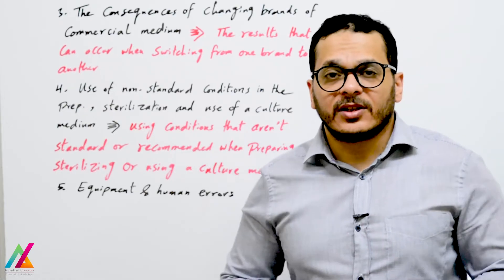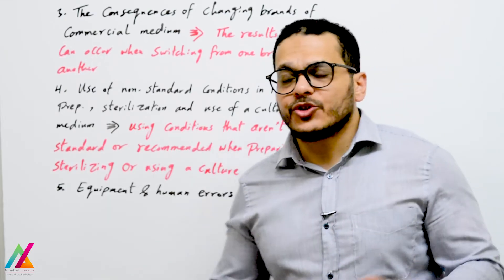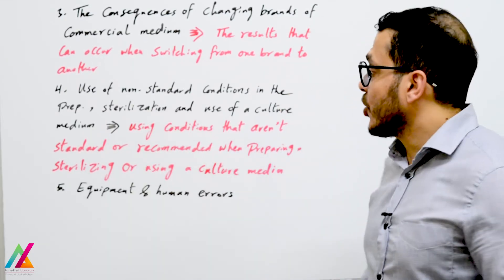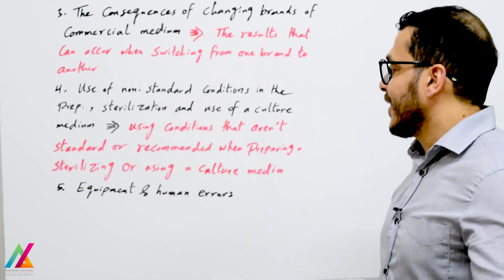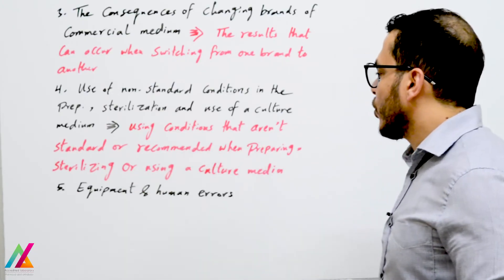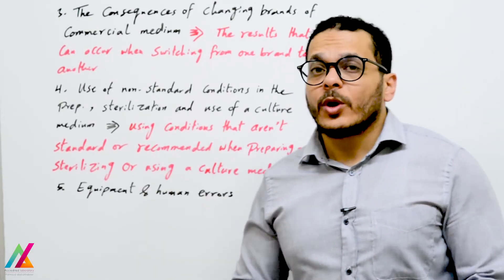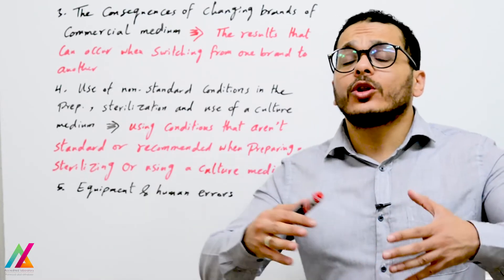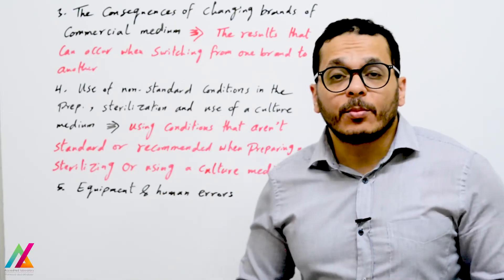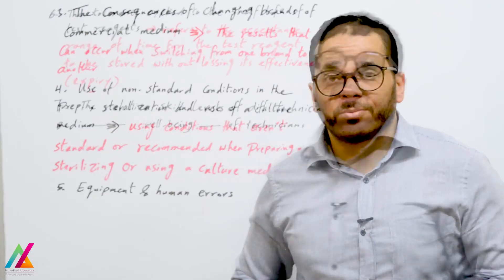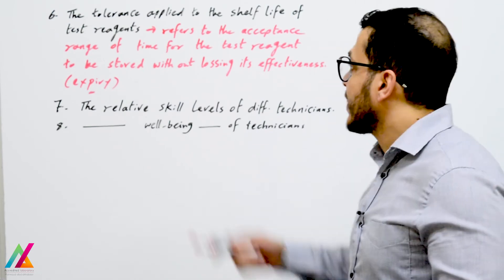You should always use standard conditions for the whole measurement process. The use of non-standard conditions in the preparation, sterilization, and use of culture media — conditions that are not standard or recommended — may affect the accuracy of results. Equipment and human errors when weighing samples or dispensing throughout the measurement process can also cause variability in results.